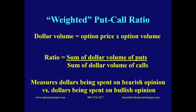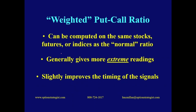Now we're measuring the dollars being spent on bearish opinion versus the dollars being spent on bullish opinion. Typically it identifies more extremes, giving us a better idea as to whether something is really overbought or really oversold. We can compute that on all the stocks, futures, and indices. It slightly improves the timing of the signals — it's very slight, but especially with individual stocks, the weighted put-call ratio is, I think, better than just the standard put-call ratio. For the broad market equity-only ratio, not necessarily.